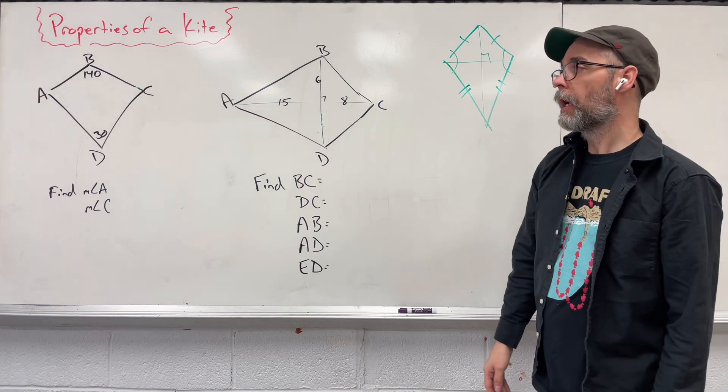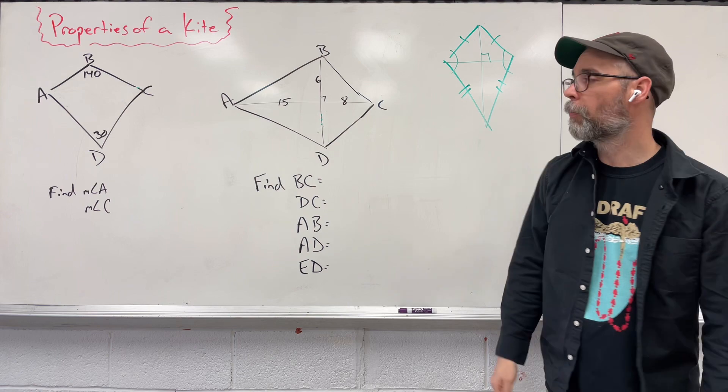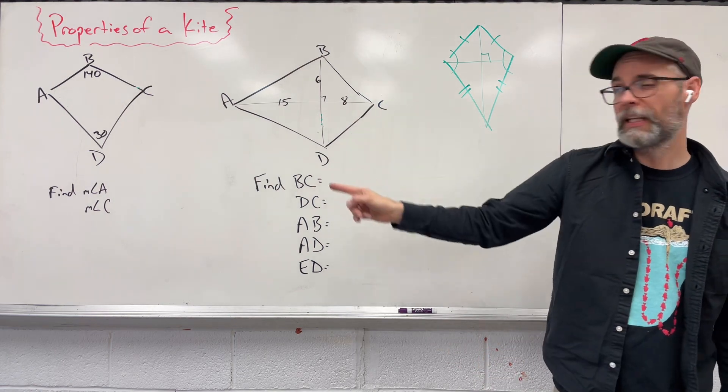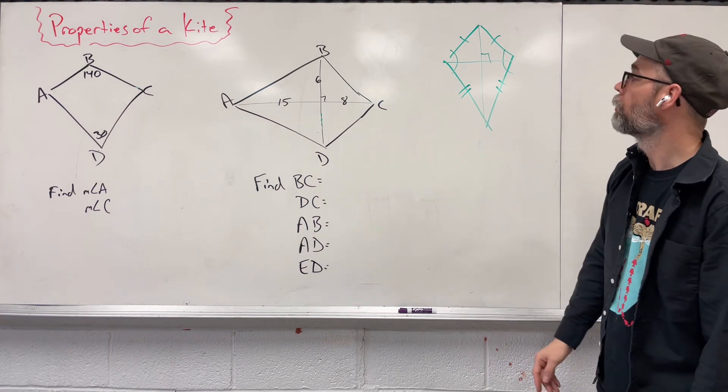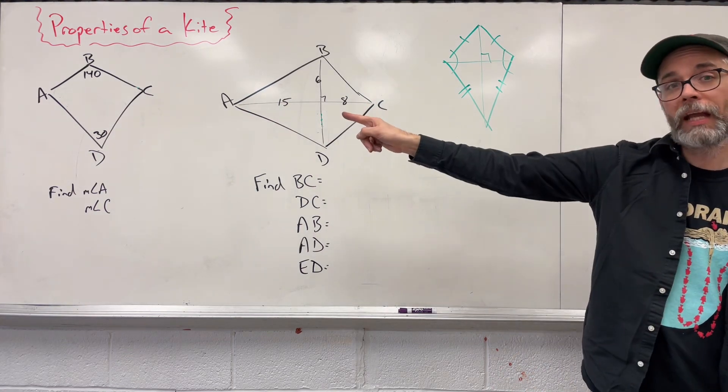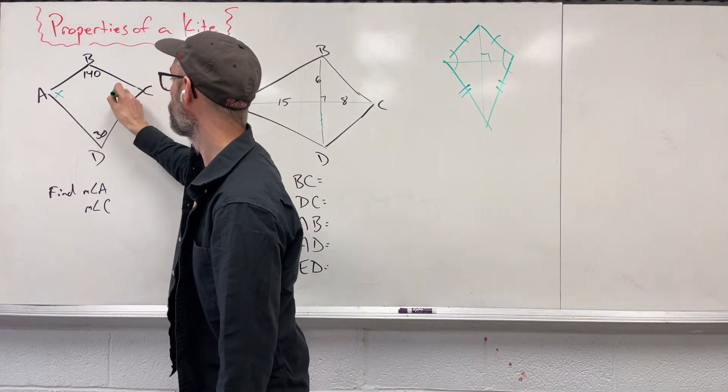We have a four-sided figure. We have 140 up top, 30 degrees on the bottom. I want to figure out what A and C is. Now, we know that we have to have at least, or we need to have one set of congruent angles. That's going to be A and C. A and C are both going to be the same. I could put an X and an X there.